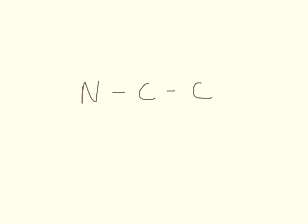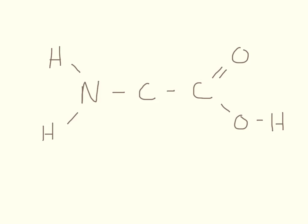The N becomes an amino group, so we've got the two H's there, and the carbon on the end is a carboxyl group. We're checking that each carbon has four bonds and the nitrogen has three bonds, so we've got to add some bonds to this alpha carbon. We call this the alpha carbon — the one in the middle — and it always has a hydrogen attached here.